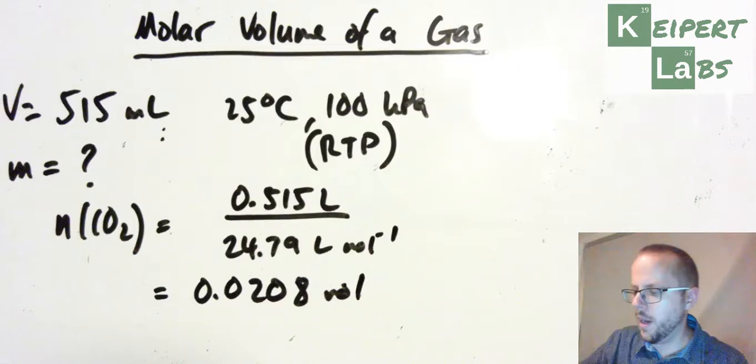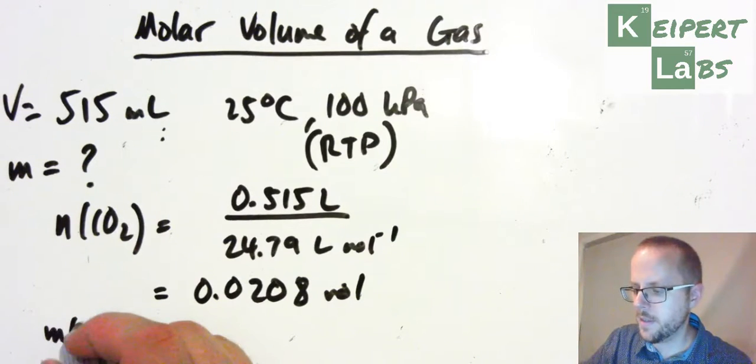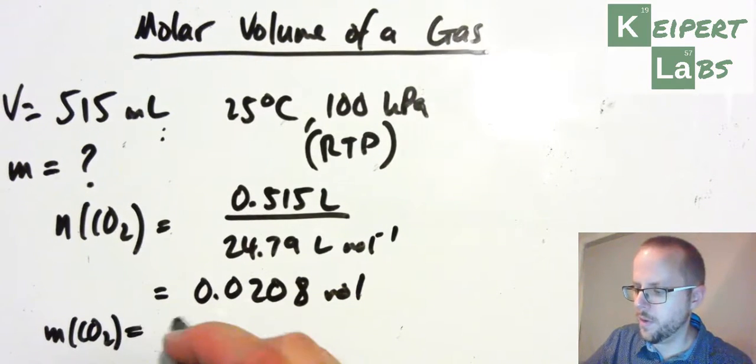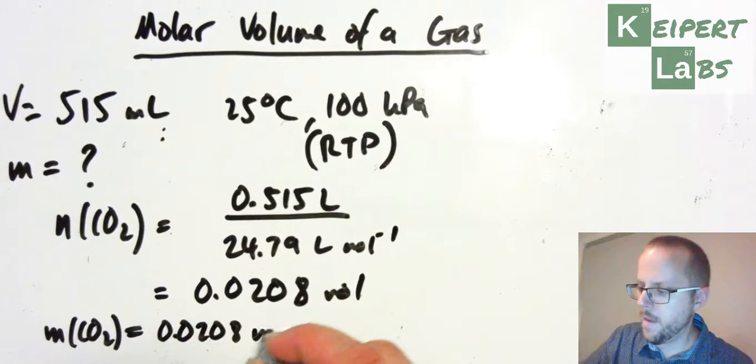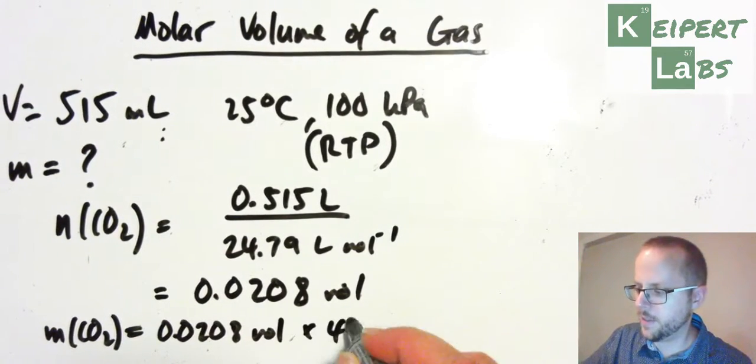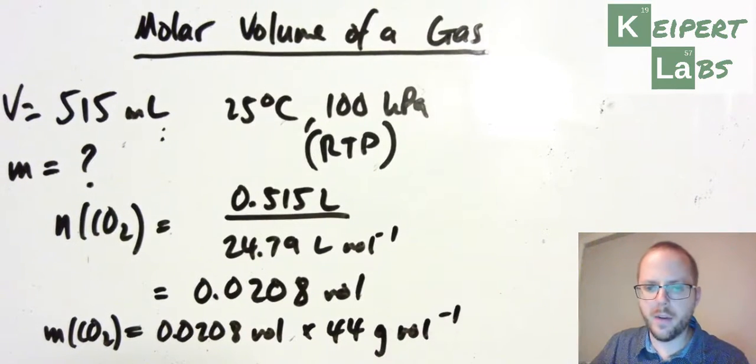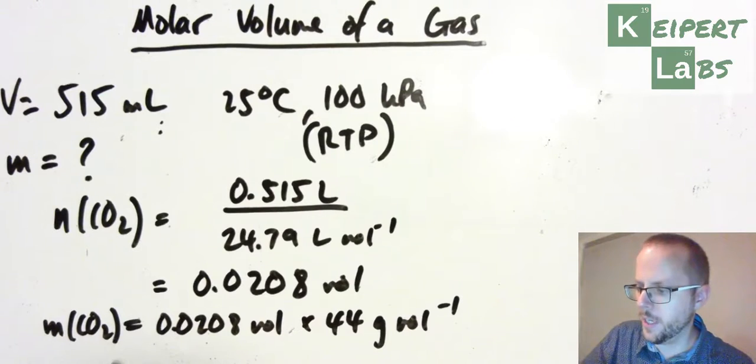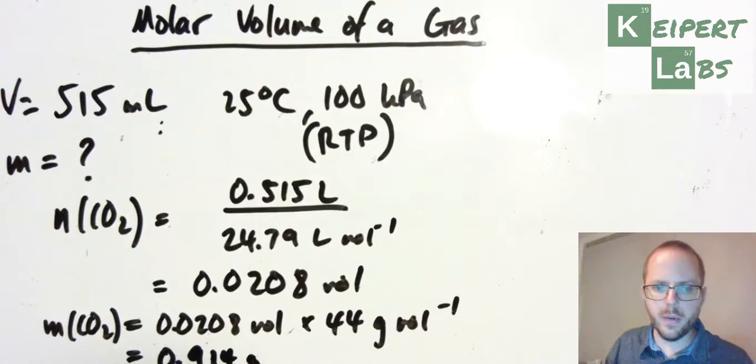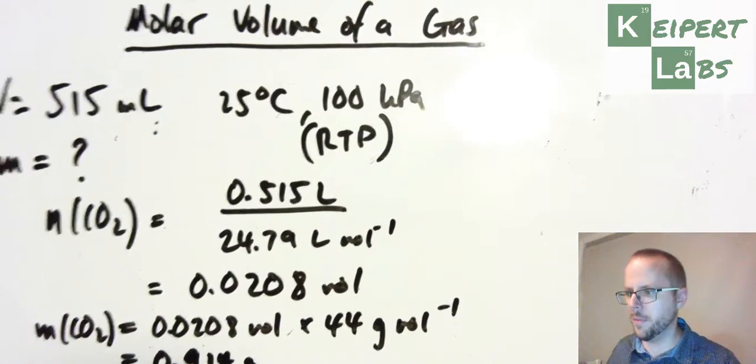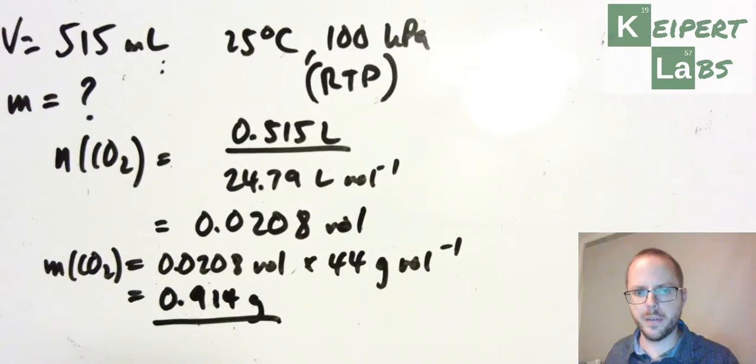And now I can then work out the mass using this value, multiplied by the molar mass of carbon dioxide, which is 44 grams per mole, and which equals 0.914 grams. Now I realise that that's just pushed off the bottom of the screen a little bit, so I can shuffle that up for a second.